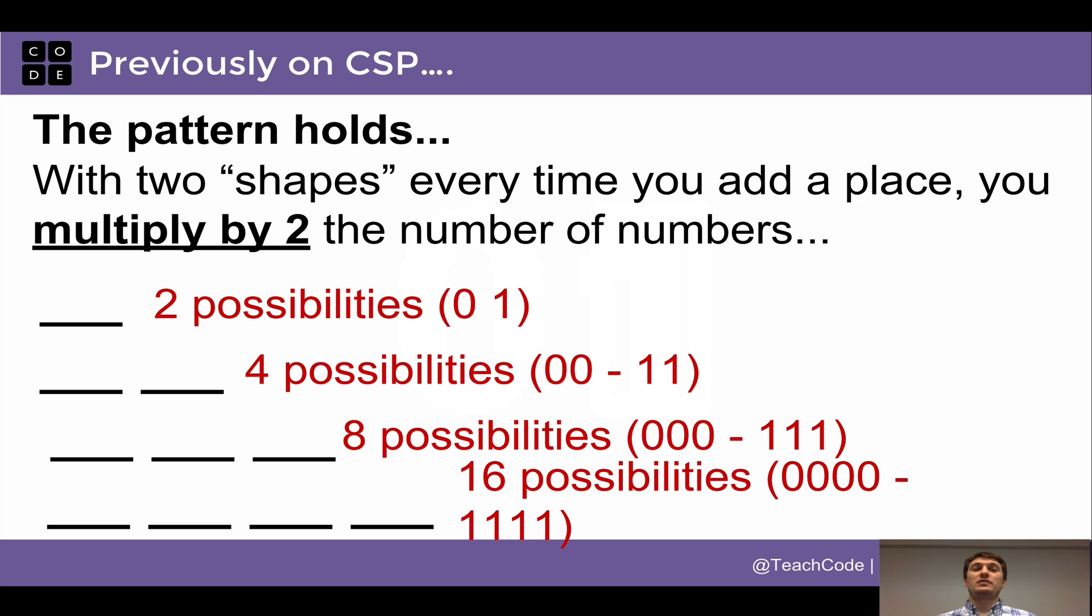So the same pattern holds when you have two shapes. With two shapes, every time you add a place value, you multiply by two the number of possible numbers you can make. So with one place, there are two possibilities, zero or one. With two places, there are four possibilities, zero, zero through one, one. With three places, there are eight possibilities. And with four places, there are 16 possibilities. So every time you add a place value, it just multiplies by two the number of possible things you can make.